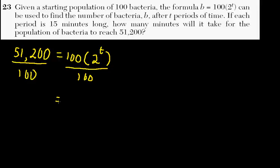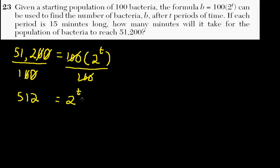The first step in solving this is dividing by 100 on both sides. That gives us 512 — essentially the zeros cancel, because when you have numbers that end in just zeros, you can do that. So the 100s cancel, and you have 512 equals 2 to the t.